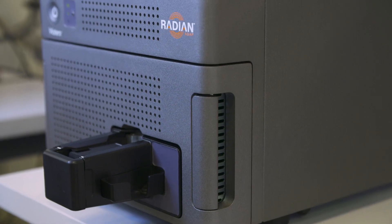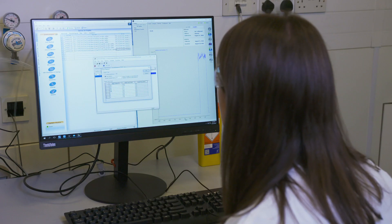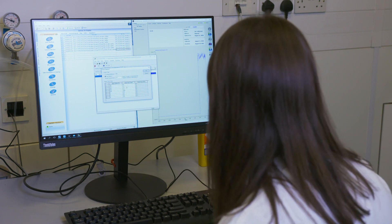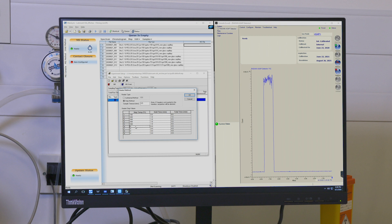However, when dealing with highly complex samples, some degree of separation is beneficial. RADIAN ASAP offers features such as the ability to apply a thermal gradient temperature ramp that separates components based on their different boiling points.